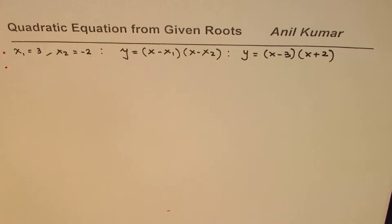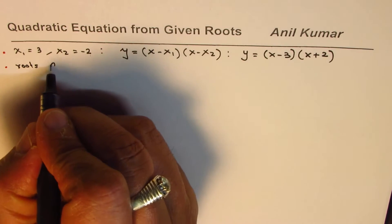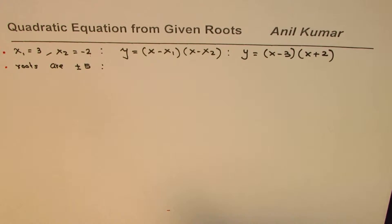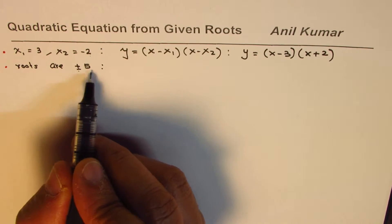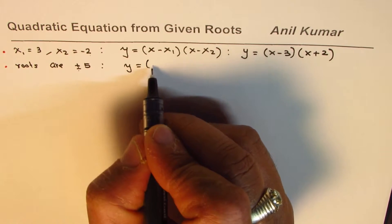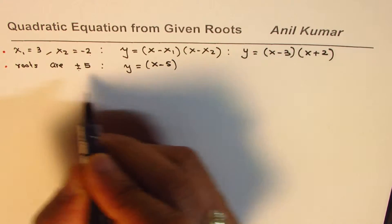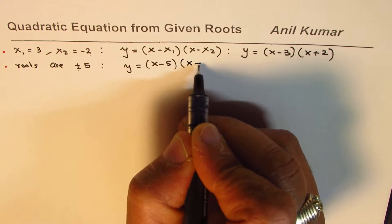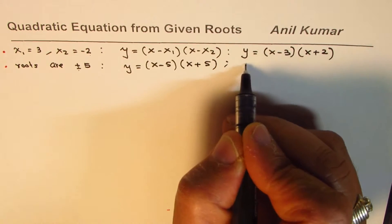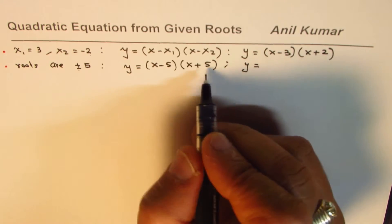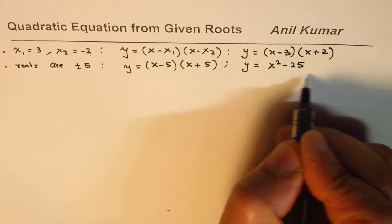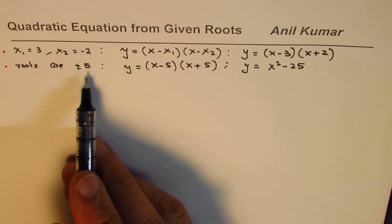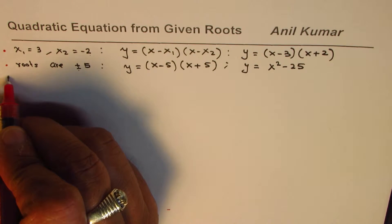Let's take another example where the roots are plus or minus 5. We have two roots: plus 5 and minus 5. We write y equals x minus 5 times x plus 5, which simplifies to y equals x squared minus 25. That's the standard form. For integer roots it's fairly simple.